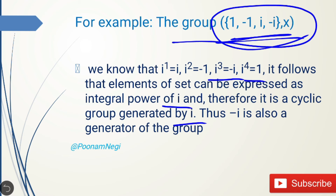In a similar way, we can verify that this group can also be expressed as integral powers of -i. That means there are two generators for this group: one is i and the next one is -i.